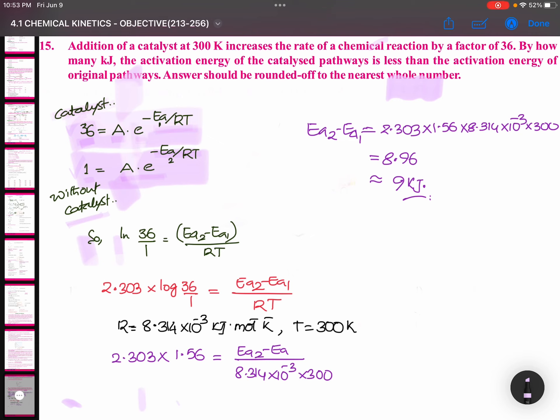This is e to the power of minus Ea by RT. So for this purpose, we take ln. When ln(36/1) or ln(36) minus ln(1), the A's won't be there. Both A's are the same, so they cancel. e to the power of minus Ea by RT becomes Ea2 minus Ea1 by RT. It's a simple mathematics formula.